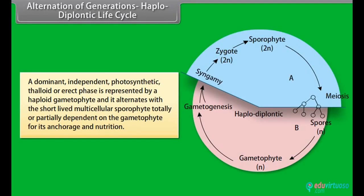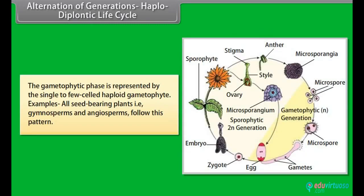Haplodiplontic life cycle: A dominant, independent, photosynthetic, thalloid or erect phase is represented by a haploid gametophyte, and it alternates with a short-lived multicellular sporophyte totally or partially dependent on the gametophyte for its anchorage and nutrition. The gametophytic phase is represented by the single to few-celled haploid gametophyte. Examples: all seed-bearing plants, that is, gymnosperms and angiosperms, follow this pattern.